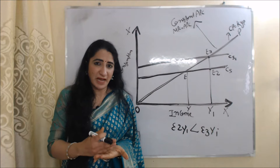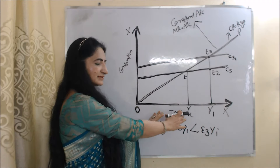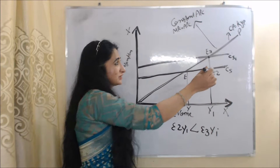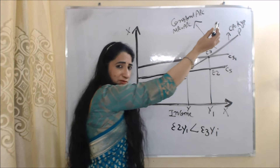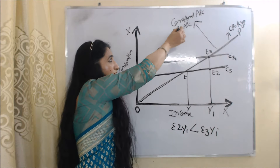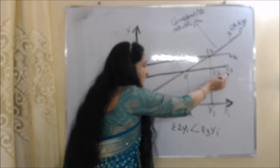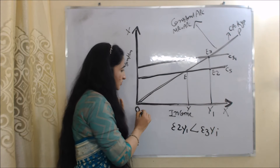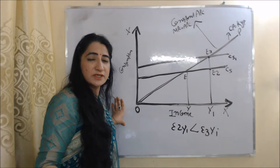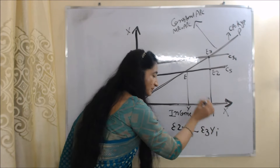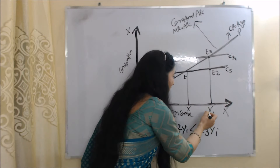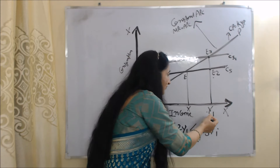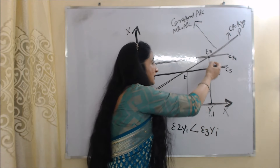Now we will understand the permanent income hypothesis with the help of a diagram. On the X-axis we have income, and on the Y-axis we have consumption. The OP line represents the long-run consumption function equal to KYP, showing constant APC where MPC equals APC. CS and CS1 are the short-run consumption functions. E is our initial equilibrium point and our initial income is OY. Suppose our income increases from OY to OY1. If we consider this increase as transitory income, then we will consume E2Y1. On the other hand, if we consider the increase as permanent income, then we will consume E3Y1.